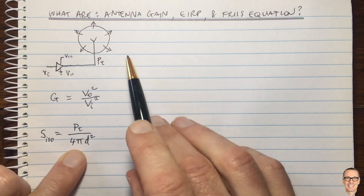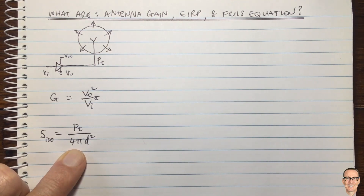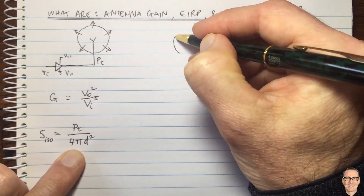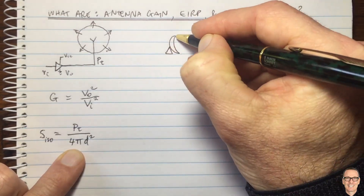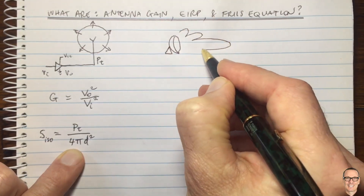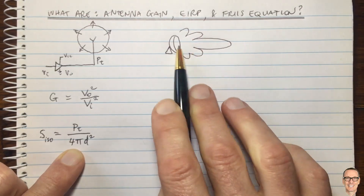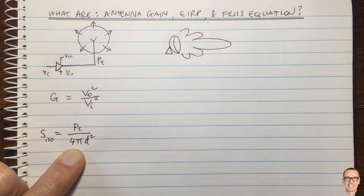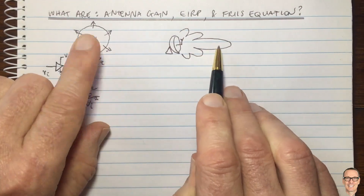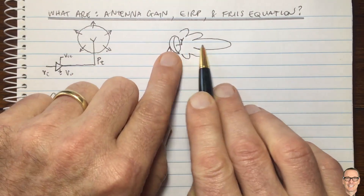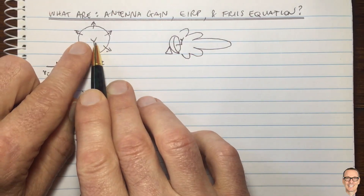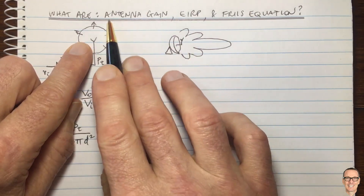Now, what if you have a different shape of antenna — for example, a dish-shaped antenna like a satellite dish? This shape has a different radiating pattern, meaning some directions receive more energy than others. This is what we call a directed antenna. We can see a concept of gain here because there's more energy going in a particular direction compared to an isotropic antenna.